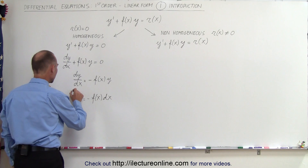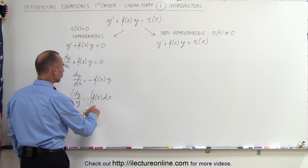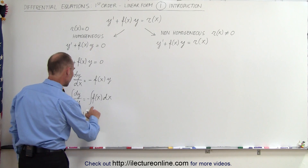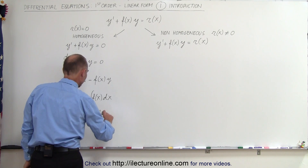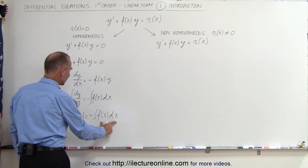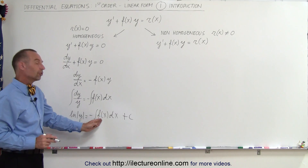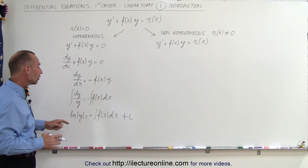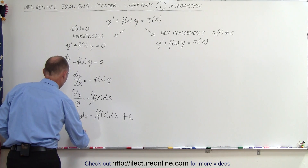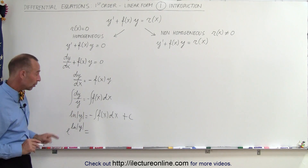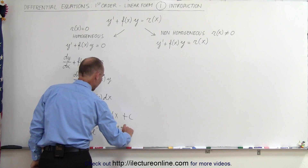Now we integrate both sides of the equation. The left side integrates to the natural log of y. On the right side, since we don't know what the function of x is, we simply write it as the negative of the integral of f(x) dx. When we integrate, we also get a constant of integration plus c, which we can't forget. We then take both sides as exponents of e — that is, we take the anti-log of both sides — giving us e raised to the natural log of y equals e to the minus integral of f(x) dx plus the constant of integration.